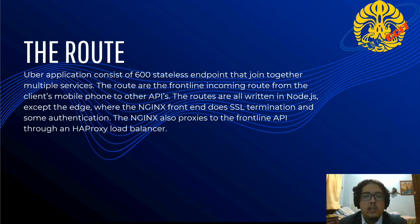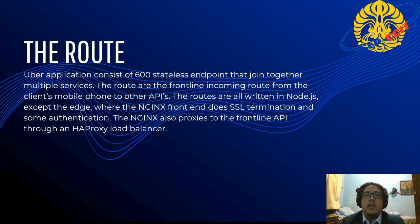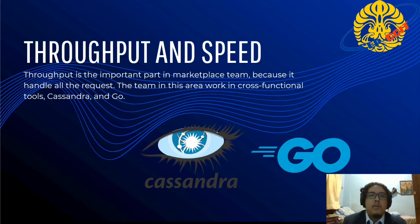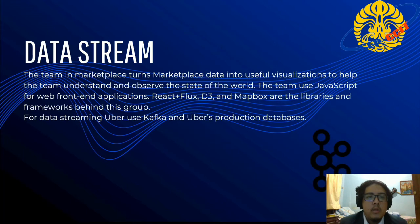In the marketplace stack, the routing layer contains 600 stateless routers. The routers are created from Node.js, but the edge of the routing is handled by NGINX, which does SSL termination with some authentication. NGINX also provides proxying to the front-line API as a proxy load balancer. Throughput and speed are key in the marketplace team, as they connect requests in real time. The team uses cross-functional tools including Cassandra and Go.